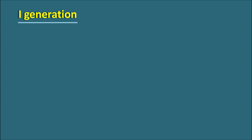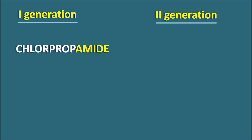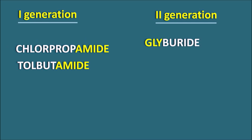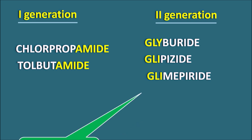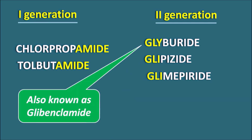Sulfonylureas can be classified into first generation and second generation. First generation includes chlorpropamide and tolbutamide. These older drugs are nowadays less used because of lower potency and shorter duration of action, with tolbutamide being the only one still in clinical use. Second generation drugs include glyburide (also known as glibenclamide), glipizide, and glimepiride.